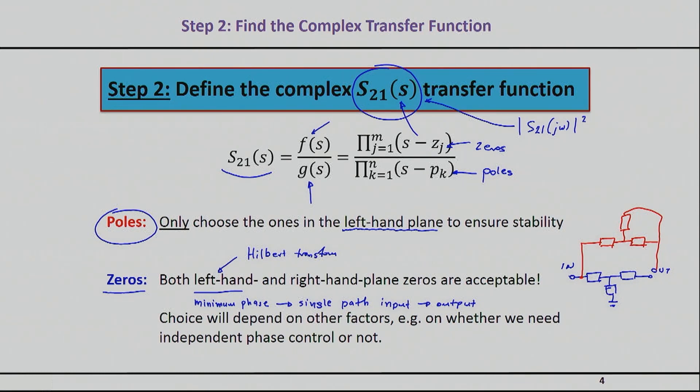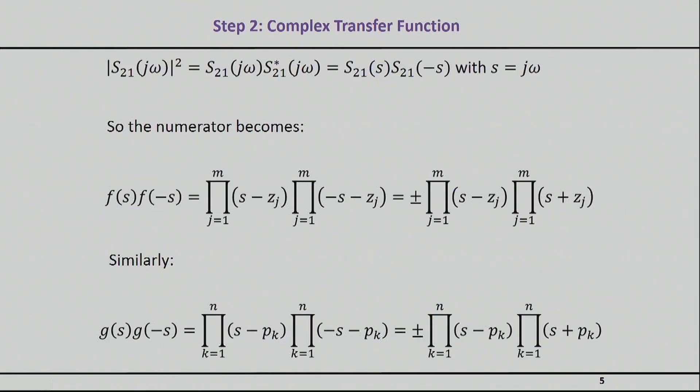All right, so again, poles only on the left-hand plane necessarily. Zeros can be left or right depending on the desire. Now once we start from the S21 square magnitude, we must be able, as I said before, to synthesize this S21 in the complex domain.